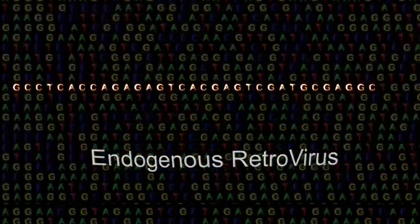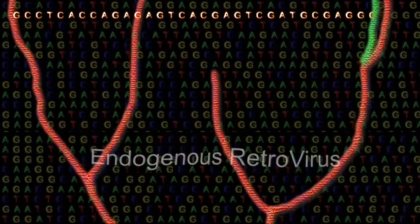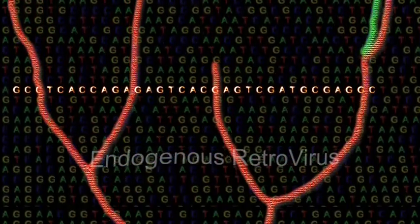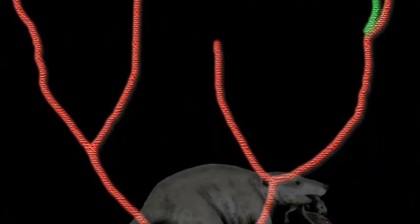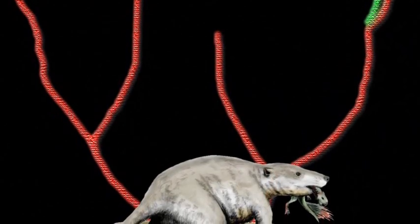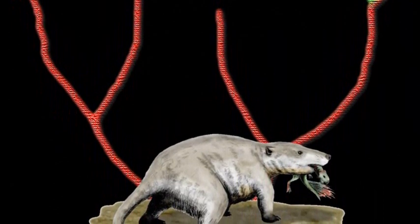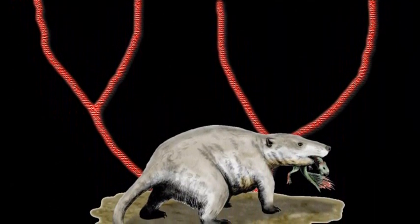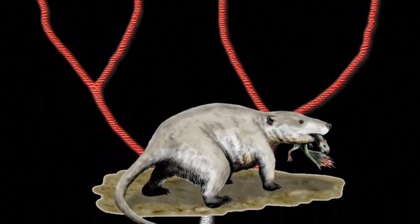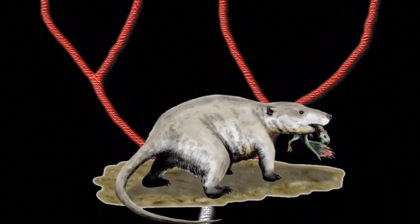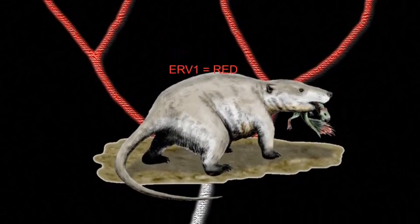Let's examine how endogenous retroviruses, or ERVs, would behave within a model of evolution by common descent. Suppose an ancient creature, let's call it Primus Mammalius, is the common ancestor of all modern mammals and is infected by a retrovirus that becomes endogenous. All of the Primus descendants would be expected to carry the same ERV, let's call it ERV-1, in the same chromosomal location.